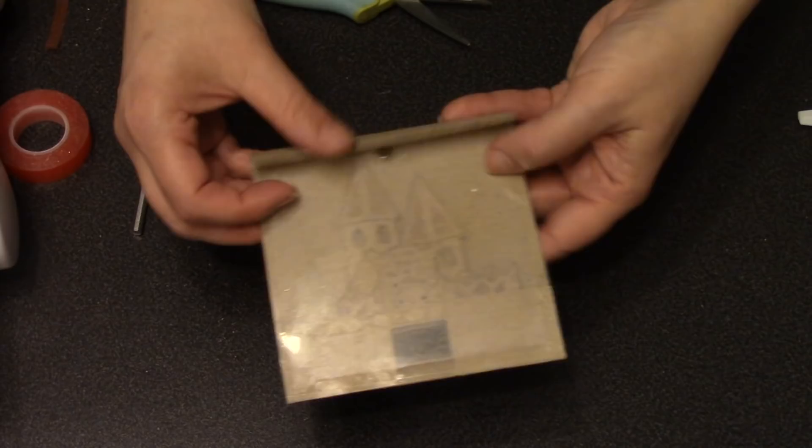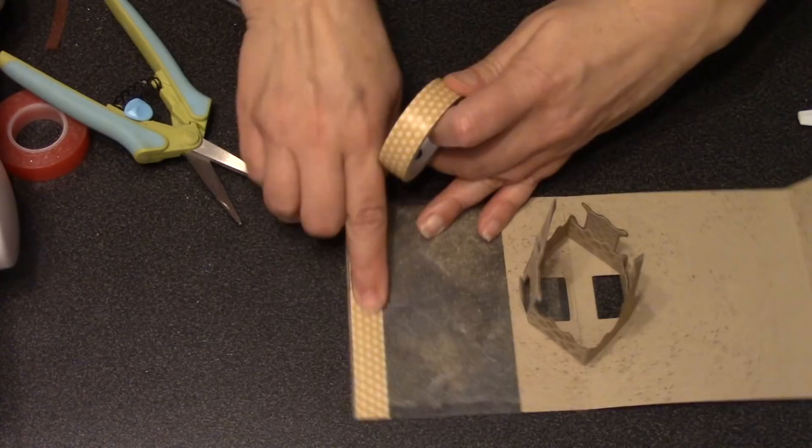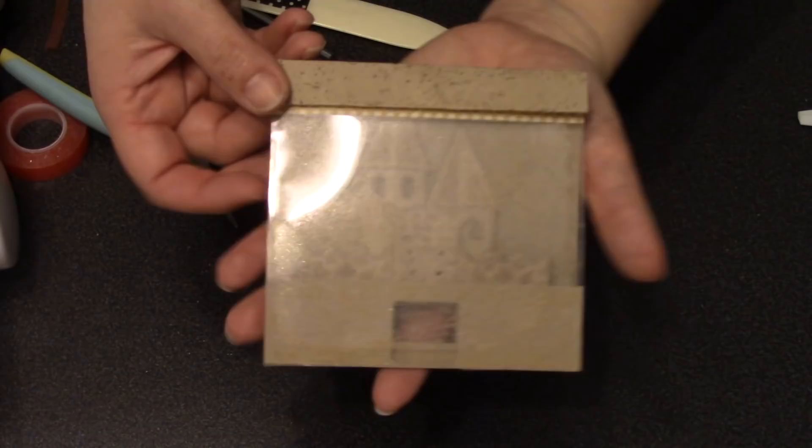If I don't want to see that magnet in the finished card, it's not a big deal because I can just cover it using some washi tape and wrap that around the transparency to cover both sides. Plus that's going to add a little bit of much-needed color to this card.